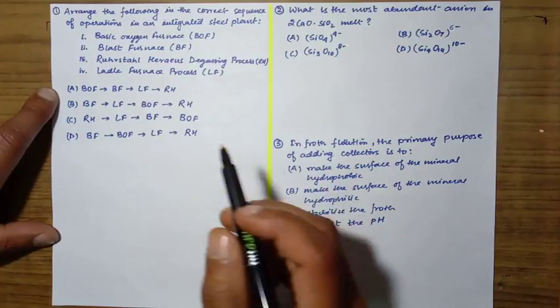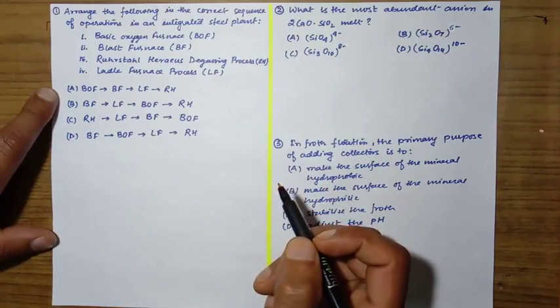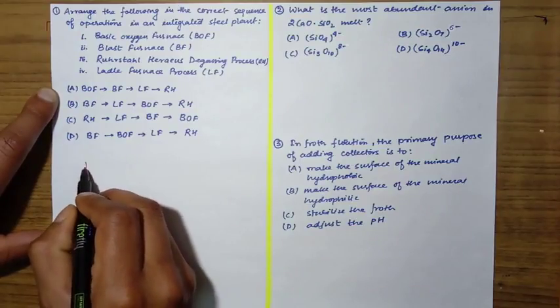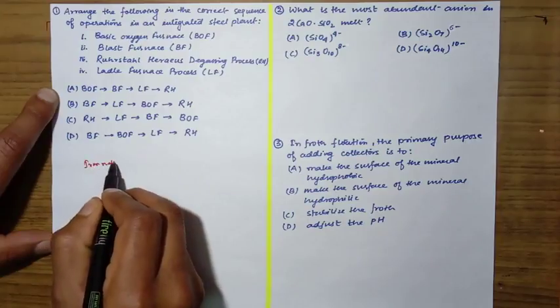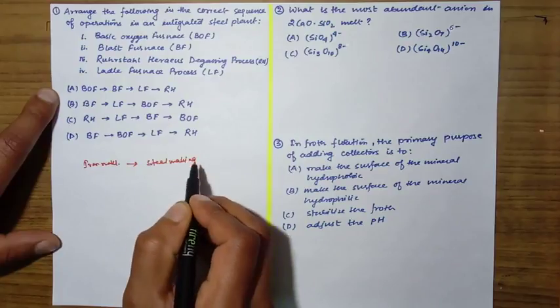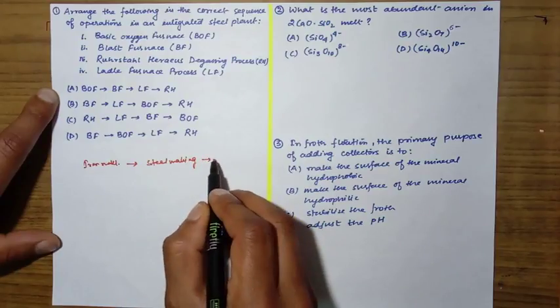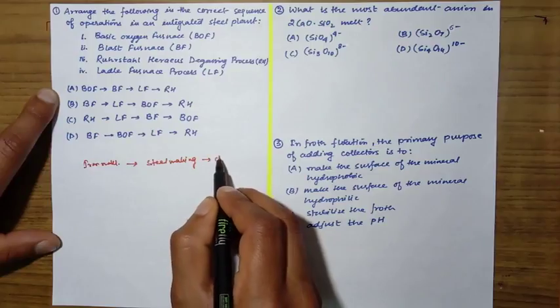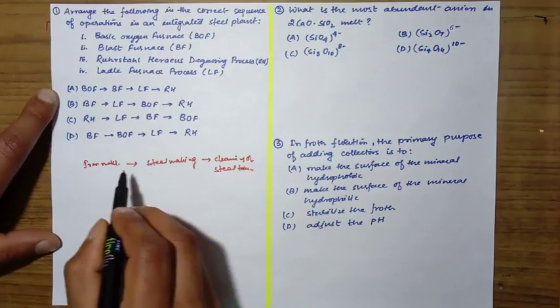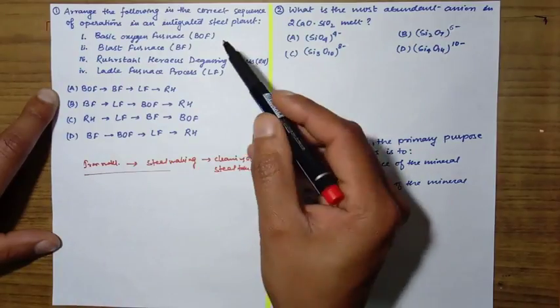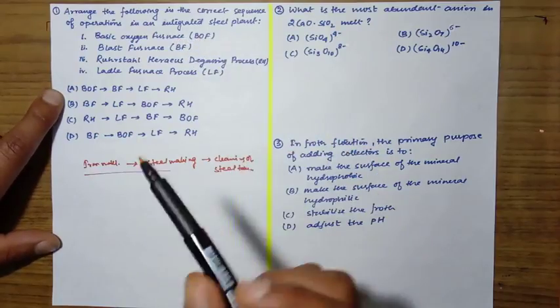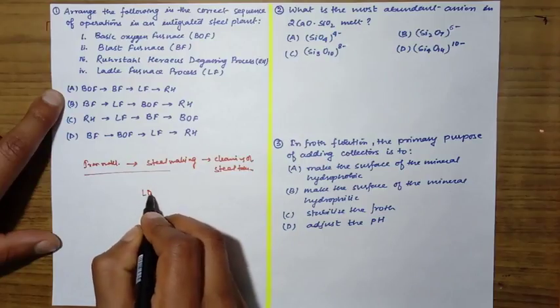So we have to arrange in correct sequence of operations. We know in an integrated steel plant, the first step is iron making, then steel making. In steel making, cleaning of steel takes place. The basic oxygen furnace is the LD converter, which is used in steel making.